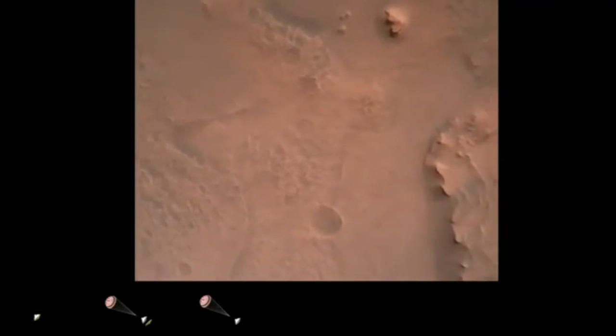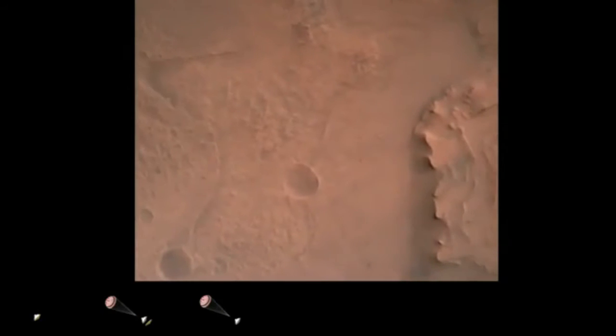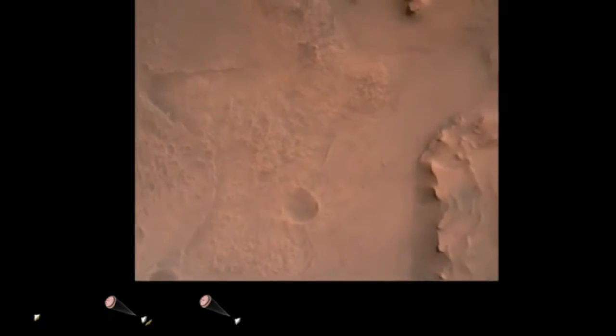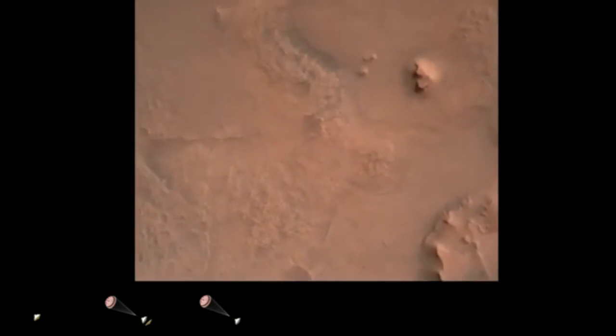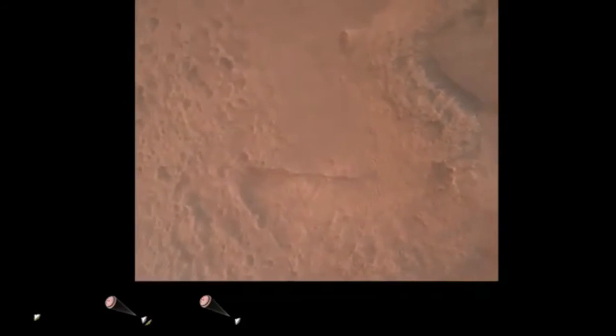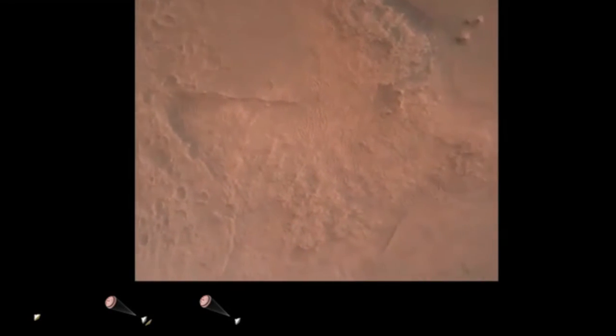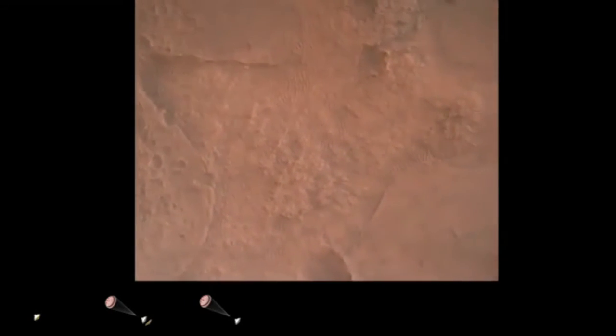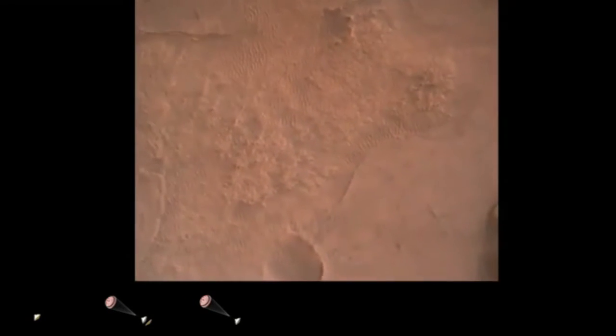Perseverance is continuing to descend on the parachute. We are coming upon the initialization of terrain relative navigation and, subsequently, the priming of the landing engines. Our current velocity is about 90 meters per second at an altitude of 4.2 kilometers. Lander vision system has produced a valid solution as part of terrain relative navigation.